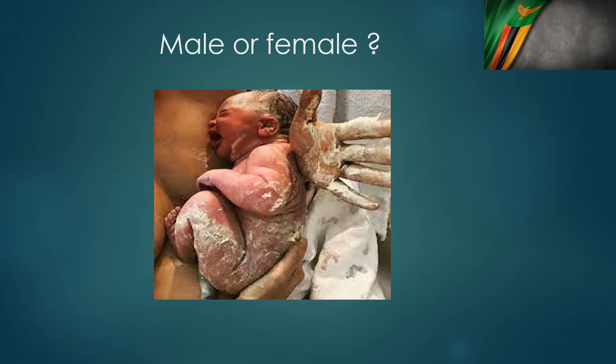When a baby is born in the African setup, we lift up the baby, show the genitals to the mother, and tell her to decide what she thinks the baby is — is the baby male or female? Once the mother decides, everyone is happy. The midwives write the sex of the baby in the file without really much thought.